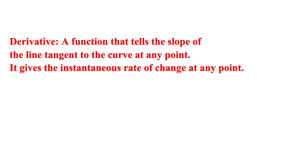For today's video, we will be talking about how to find a derivative, what is a derivative, and what are the rules for a derivative. The definition of a derivative is a function that tells the slope of the line tangent to the curve at any point. It gives the instantaneous rate of change at any point. We will be looking at that when we get closer to how to find it and some examples.